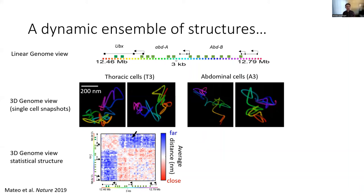For example, DNA in thoracic cells has a statistical tendency to cluster into two different domains. This first domain contains the UBX gene and its downstream enhancers, but not the upstream ones. Thoracic cells express UBX, but genetic experiments show they require only these downstream intronic enhancers to do so, and it is those enhancers that lie in the domain which is more often physically close to the start site of the gene.